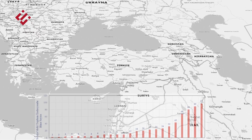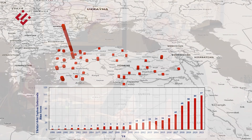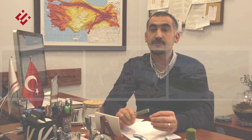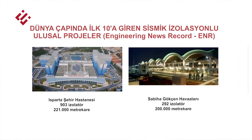Ülkemizde özellikle son 10 yılda sismik izorasyonlu yapı sayısında hızlı bir artış olmuştur. Ülkemizde yaklaşık 100 kadar sismik izorasyonlu yapı bulunmasına rağmen bunların büyük bir kısmı hastanelerden oluşmaktadır. Hastane projelerinde binlerle ifade edilen sayılarda sismik izoratör kullanıldığından Türkiye, son 5 yılda dünyanın en çok sismik izoratör kullanan ülkelerinden birisi haline gelmiştir.